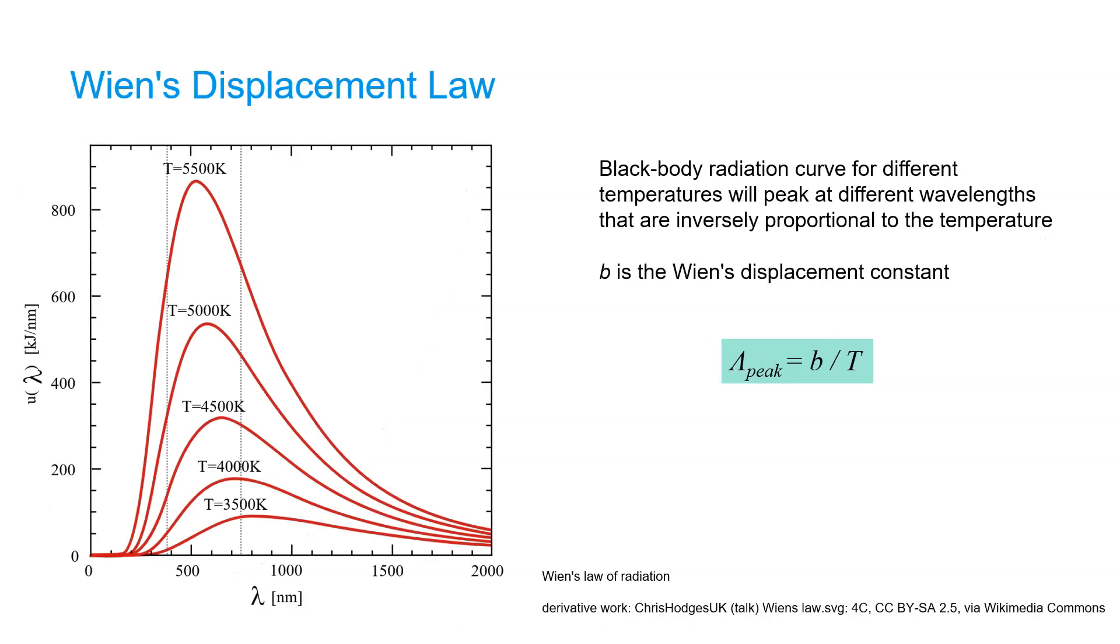When we look at the electromagnetic spectrum of a black body at different temperatures, we find that the higher the temperature, the shorter the wavelength of the peak of its emission. And this is defined by Wien's displacement law, which basically states that the peak of the wavelength equals Wien's displacement constant b divided by temperature.